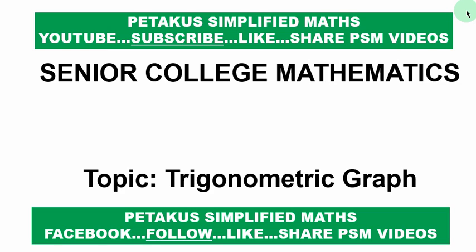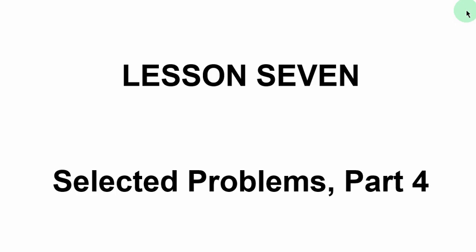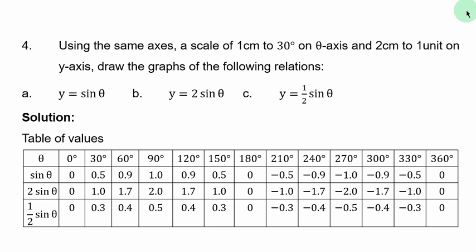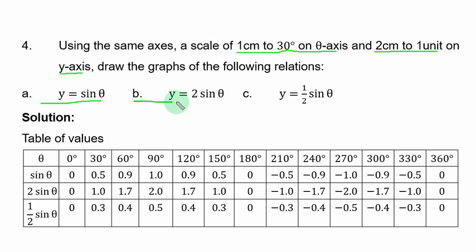Hello students, hello viewers. Welcome to Senior College Mathematics. The topic of discussion is trigonometric graphs, Lesson 7: Selected Problems, Part 4. In this part we have Example 4: Using the same axis, a scale of 1 centimeter to 30 degrees on the theta axis and 2 centimeters to one unit on the y-axis, draw the graphs of the following relations: (a) y = sin θ, (b) y = 2 sin θ, (c) y = ½ sin θ.